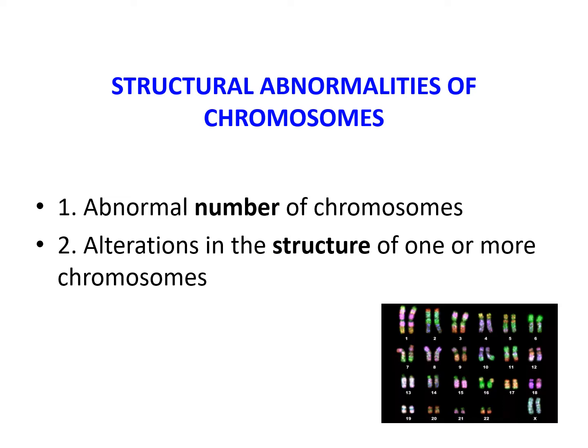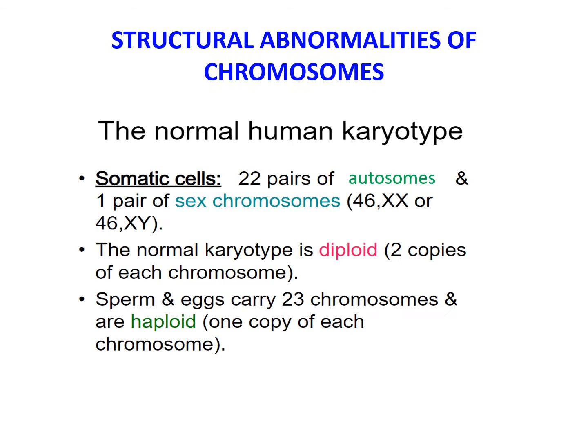Let's go to the structural abnormalities of the chromosomes. The aberration underlying cytogenetic disorder may take either an abnormal number of chromosomes or alteration in the structure of one or more chromosomes. The normal human karyotype in somatic cells has 22 pairs of autosomes and one pair of sex chromosomes — 46,XX for female or 46,XY for male. The normal karyotype is diploid, meaning there are two copies of each chromosome, but the sperm and eggs carry 23 chromosomes and are haploid, because there is only one copy of each chromosome.